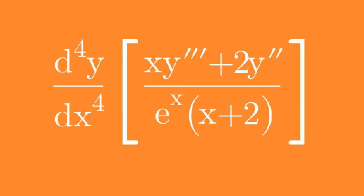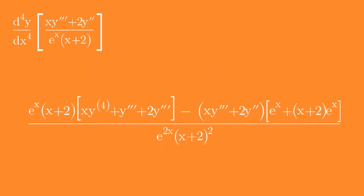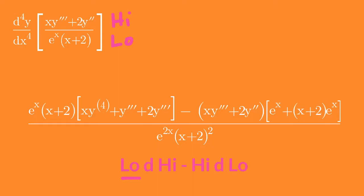To find the fourth derivative of the given expression, the third derivative requires the use of the quotient rule and product rule. To remember the quotient rule: low d high minus high d low, where low refers to the denominator, high refers to the numerator, and d means derivative. Let's start — copy the denominator here.